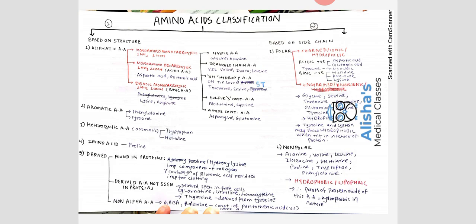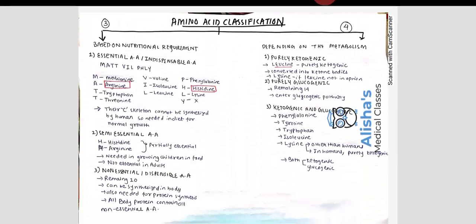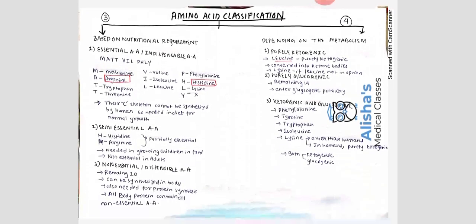Non-polar side chain amino acids include alanine, valine, leucine, isoleucine, methionine, proline, tryptophan, and phenylalanine. These are hydrophobic — water-hating — and lipophilic — lipid-loving. Parts of proteins made up of these amino acids are hydrophobic in nature.